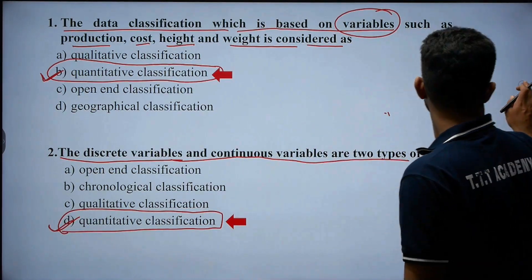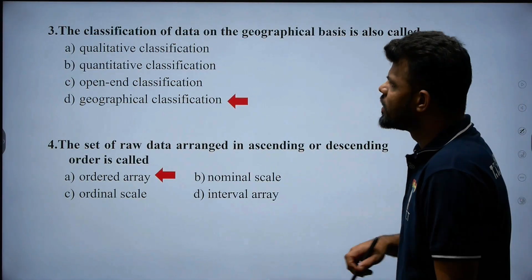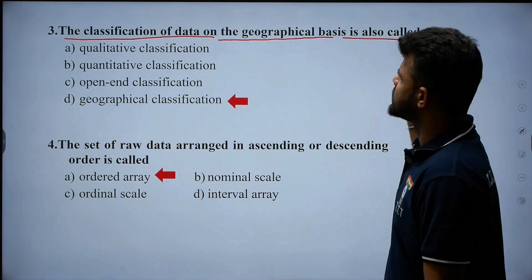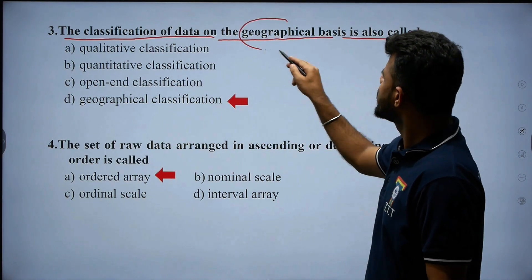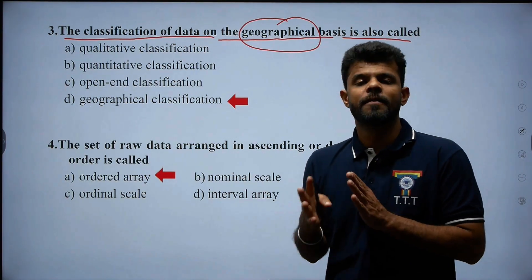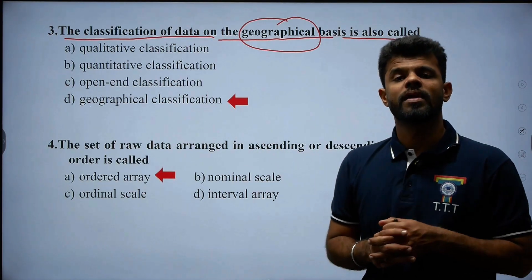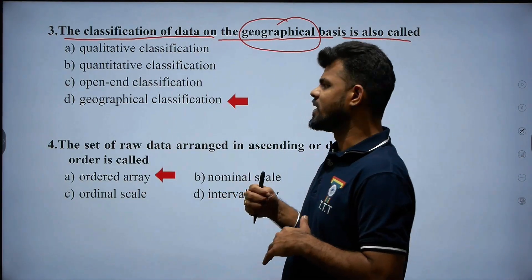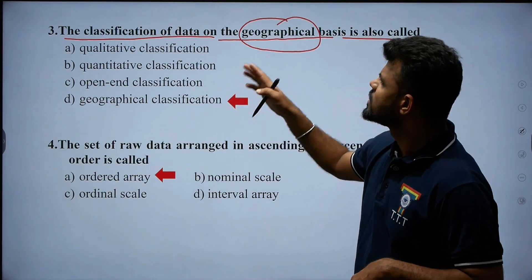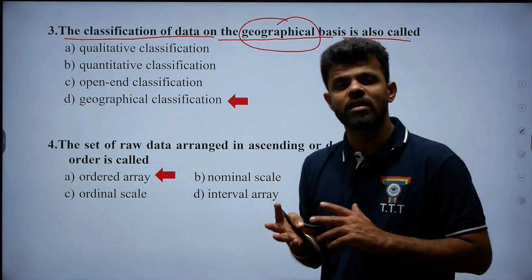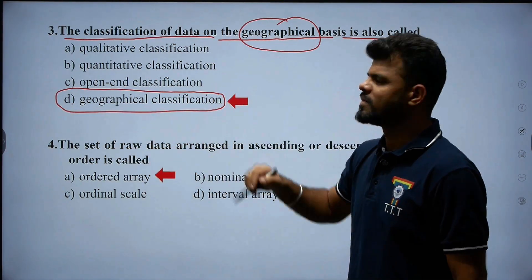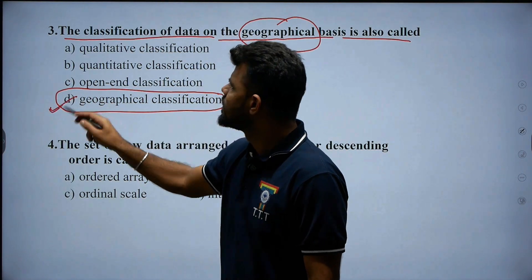Next is question number three. The classification of data on a geographical basis — when data is grouped location-wise — such type of classification is called geographical classification, or we can say spatial classification. Therefore, option D is the right answer.